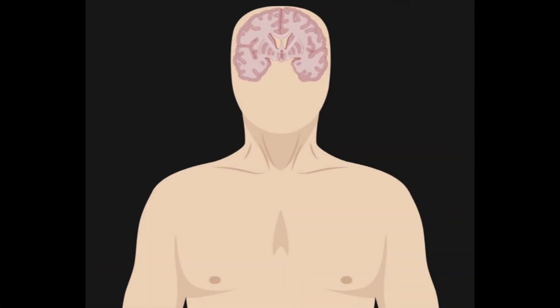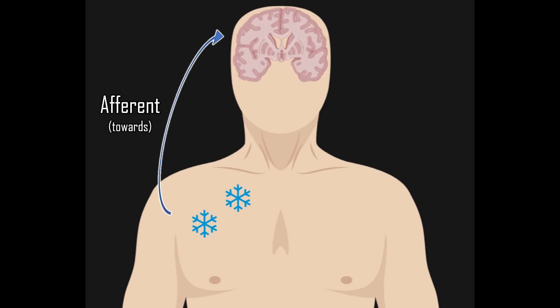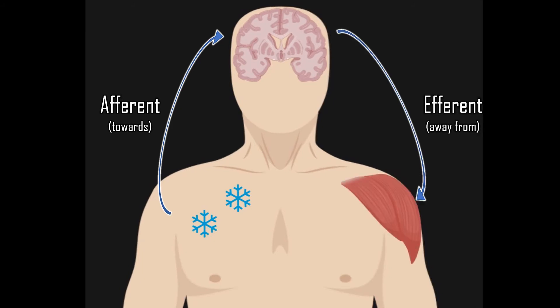The next terms are a little different because they're not being used in relation to a person standing in anatomical position. Usually I'm seeing these terms used in relation to the brain. For example, if you're cold, the message going from your skin to your brain telling you that you're cold is an afferent message — it's going towards the brain. But the message from your brain to your muscles so that you can put on a shirt is an efferent message, because it's going away from the brain.